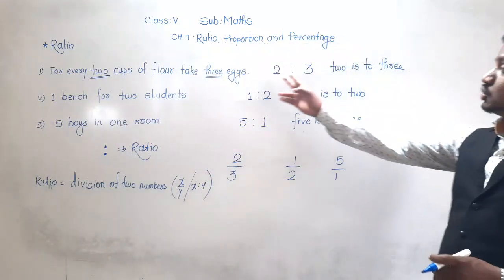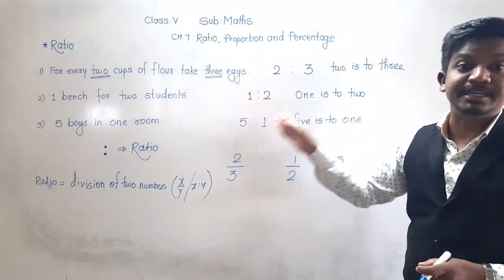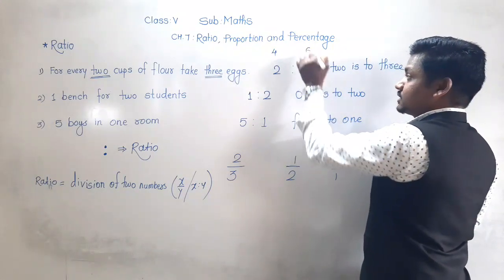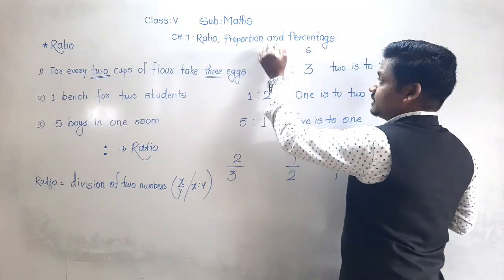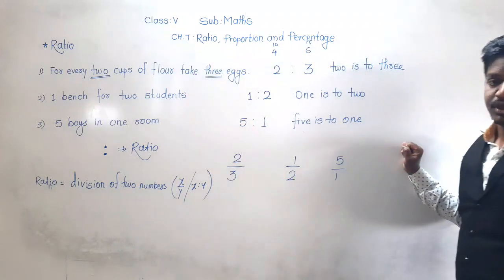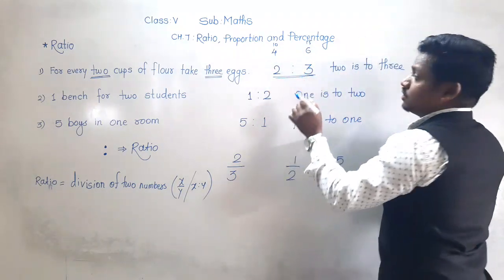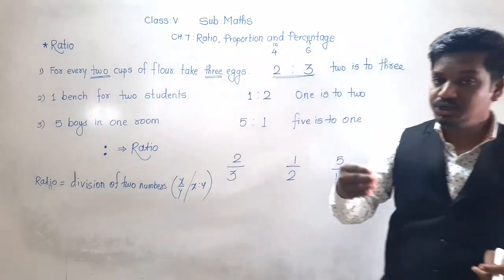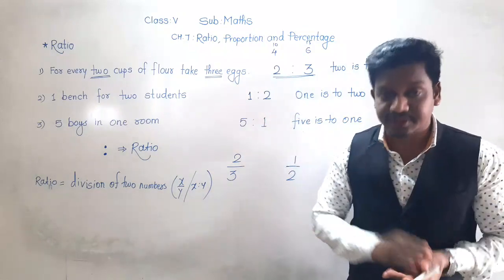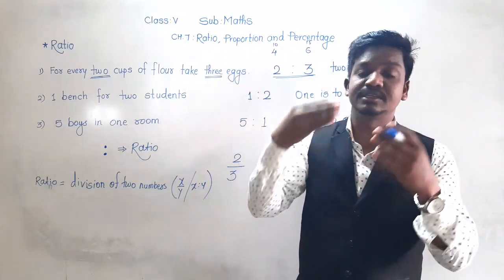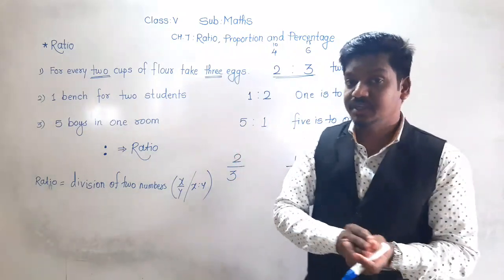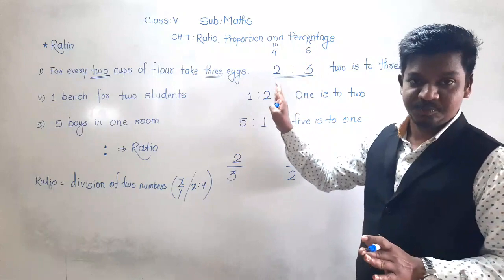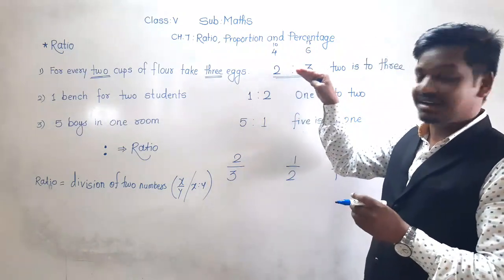Now see again - 2 is to 3, 1 is to 2, 5 is to 1. This is basic. If instead of 2 there are 4 cups, then 3 twos are 6. If 2 fives are 10 cups, then 3 fives are 15 eggs. So 2 is to 3 is the same as 4 is to 6, same as 10 is to 15. But 2 is to 3 is the basic form. When a chef tells you the recipe, he tells you the basic measurements - for 2 cups take 3 eggs.